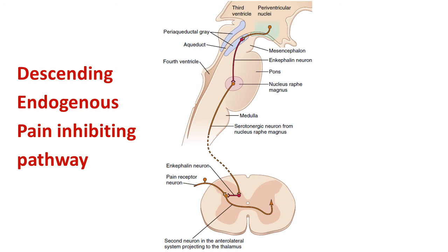The descending analgesia system consists of three major components. First, the periaqueductal gray and periventricular area of the mesencephalon and upper pons around the aqueduct of Sylvius and portions of the third and fourth ventricle. Neurons from this area send signals to the second component — the raphe magnus nucleus, a thin midline nucleus in the lower pons and upper medulla. Signals are then transmitted down the dorsolateral column of the spinal cord to the third component: a pain inhibiting complex in the dorsal horn.